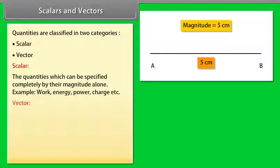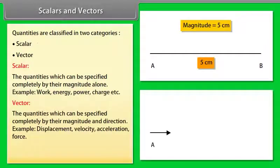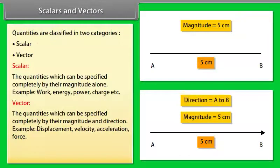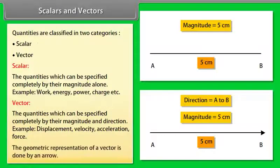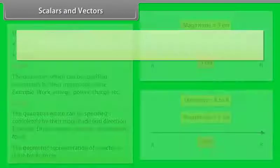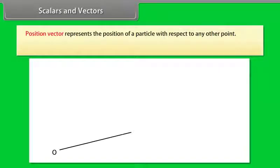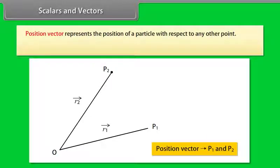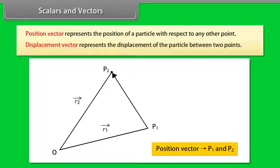Vector: The quantities which can be specified completely by their magnitude and direction. For example, displacement, velocity, acceleration, force. The geometric representation of a vector is done by an arrow. Position vector represents the position of a particle with respect to any other point. Displacement vector represents the displacement of the particle between two points.